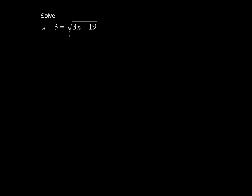X minus 3 equals the square root of 3x plus 19. We call this a radical equation because it has a radical in it, and it's the square root, the second root. So to get rid of that radical we can square each side, raise each side to the second power.